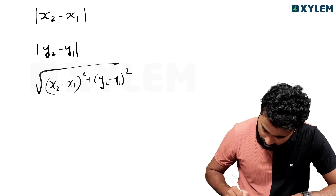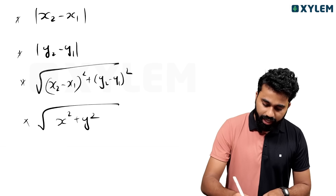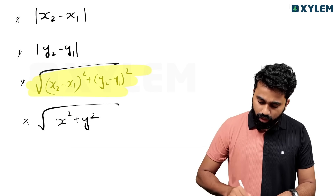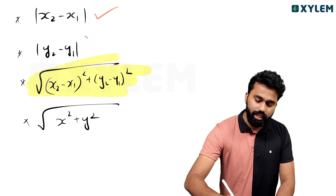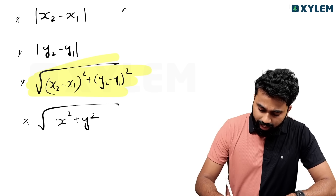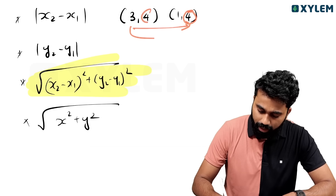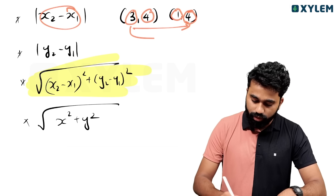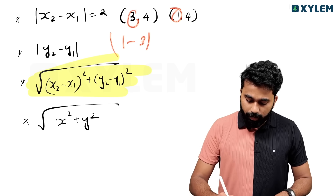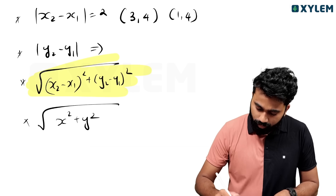The distance formula is: root of (x2 minus x1) squared plus (y2 minus y1) squared. For example, for points (3,4) and (1,4), the distance along x is x2 minus x1, which is 3 minus 1, that is equal to 2. The distance is positive, so modulus equals 2.